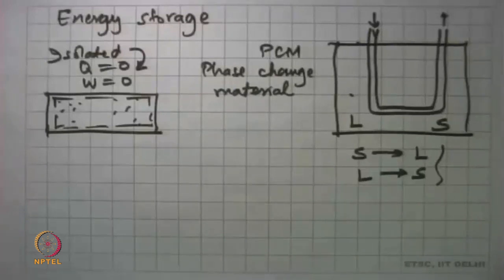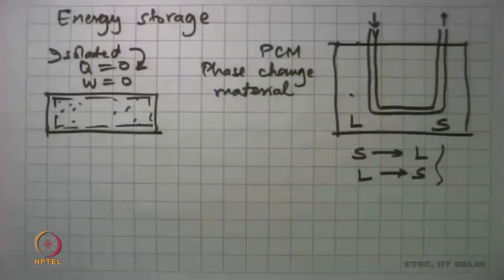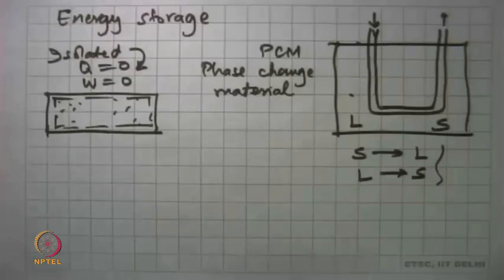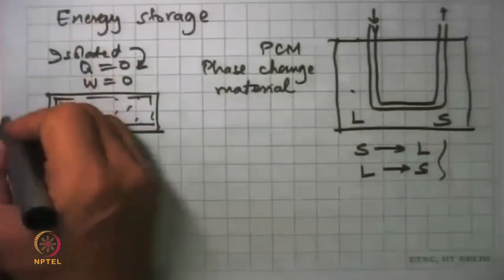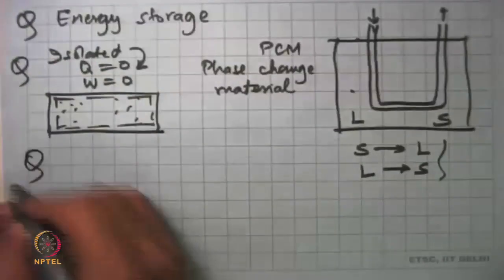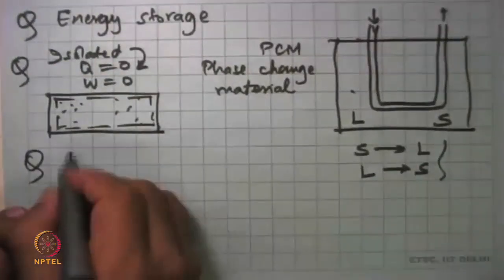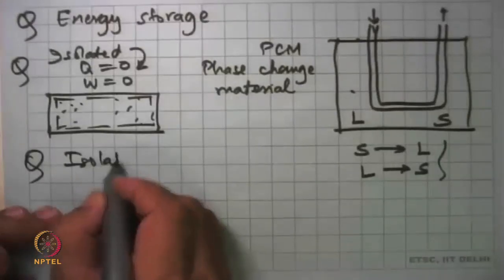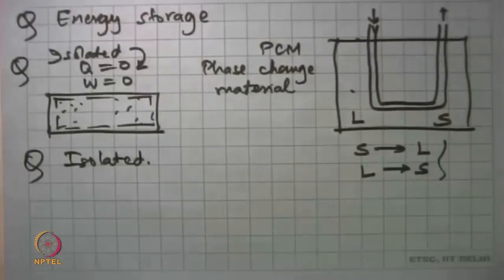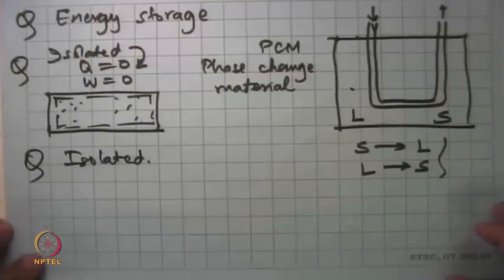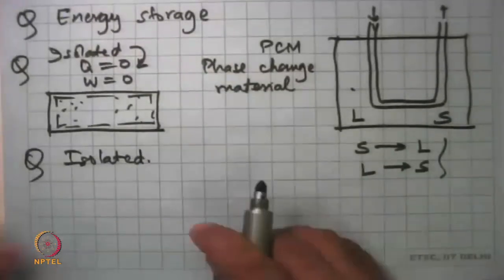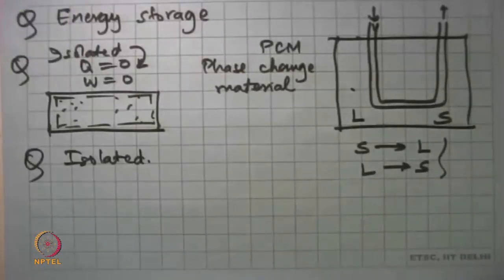Question: energy of an isolated system is constant — please give some practical examples and its significance. One example I will give is of an isolated system. Our country had a big problem, and even now every now and then there is an advertisement on TV saying that this Sunday is Polio Sunday — bring your child and get the drops.